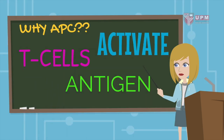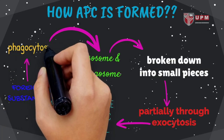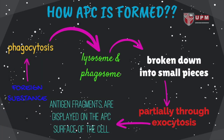T cells need the presentation of antigens to be activated and perform their roles. In the normal phagocytosis process, the invading cell containing the antigens will be fused with the lysosome and phagosome in the phagocytic cell. These cells will degrade and be broken down into small fragments, which are discharged by the cell partially through exocytosis, while some of the antigen fragments are displayed on the APC surface of the cell.